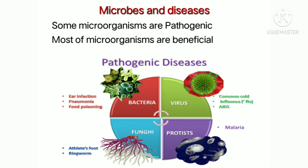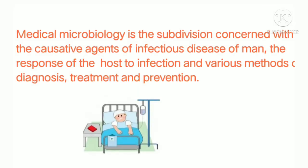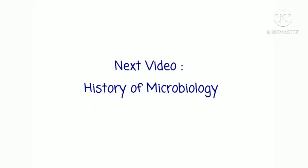Now let's study microbes and diseases. Some microorganisms are pathogenic — meaning disease-causing — while most are beneficial. Examples of pathogenic diseases: from bacteria — ear infection and food poisoning; from viruses — common cold or influenza; from fungi — ringworm; from protozoa — malaria. The field of medical microbiology is the subdivision concerned with causative agents of infectious diseases in humans, the host's response, and various methods of diagnosis, treatment, and prevention.